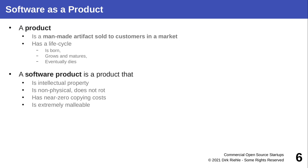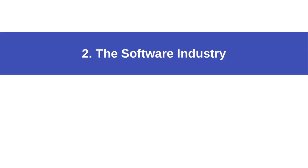Creating that second copy — copying a piece of software — has close to zero costs, really. You can make perfect digital copies of software at essentially no cost. And software, unlike physical products, is extremely malleable. You can give it any form or shape as long as it's virtual and runs on your computer.